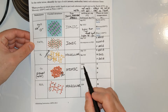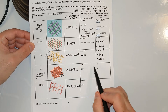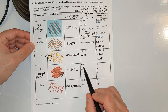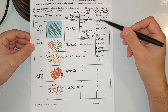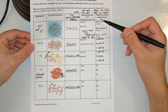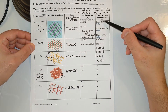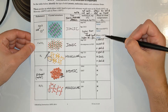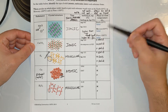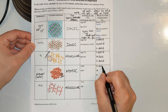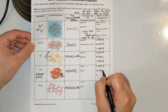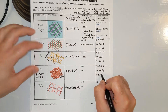Next we have copper. The melting and boiling temperatures are way, way higher than any of the temperatures on Earth, Mercury, and Pluto. So it's not going to melt on Earth, not going to melt on Mercury, and certainly not going to melt on Pluto — solid on Earth, Mercury, and Pluto.